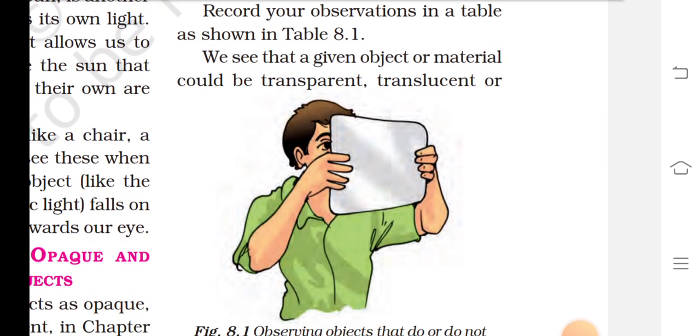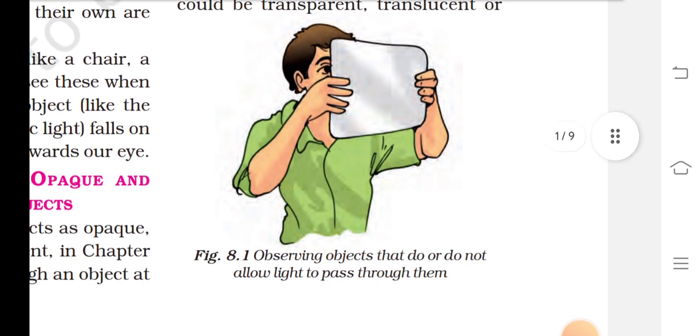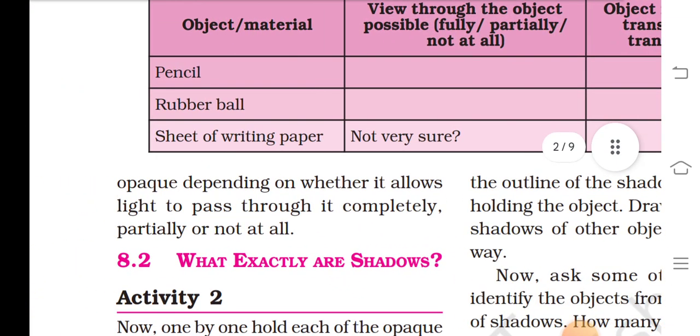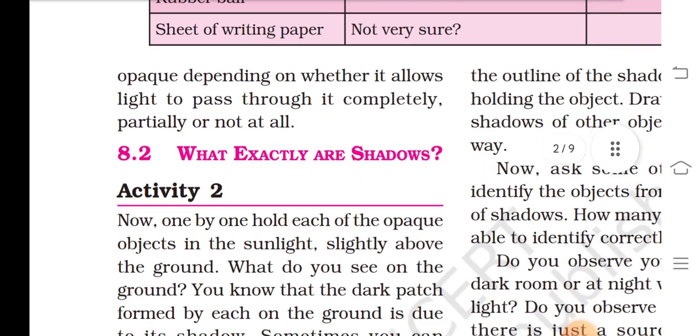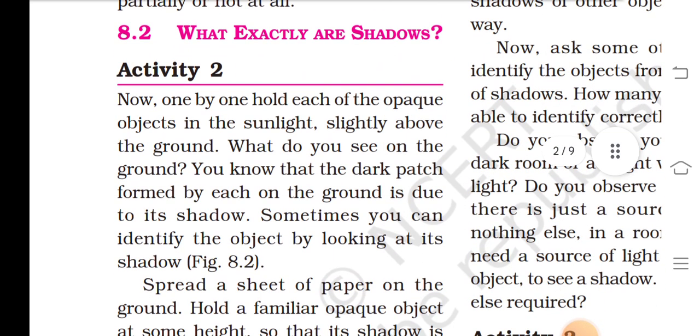We see that a given object or material could be transparent, translucent, or opaque depending on whether it allows light to pass through it completely, partially, or not at all.